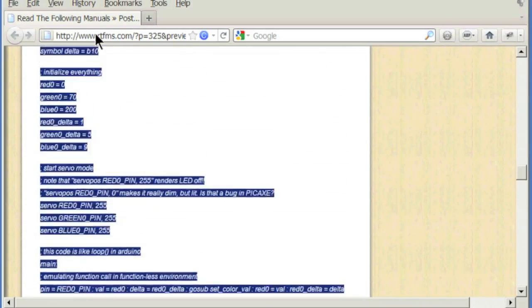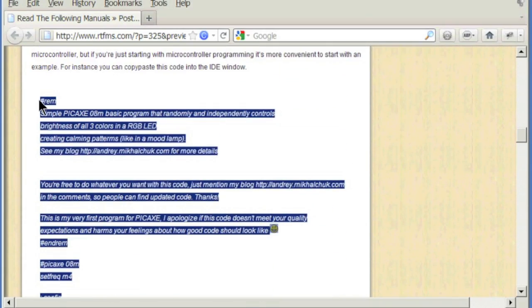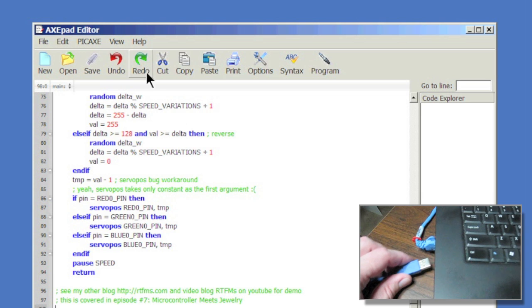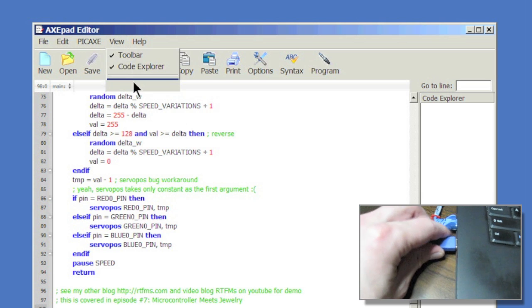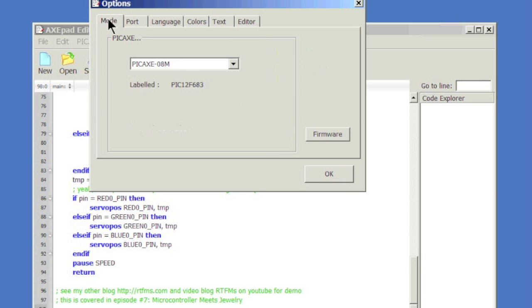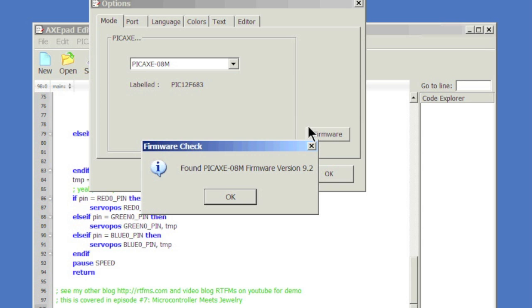Grab the source code for this project from RTFM's blog website and paste it into XPad. Connect the controller to your computer and open Options dialog. Select one of the available serial ports and PIC-X08M microcontroller. Hit the firmware button to verify that selected port is connected to the microcontroller.